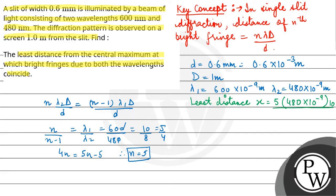Into D, which is 1 meter, upon d, which is 0.6 into 10 raised to the power minus 3. So x comes out to be 4 into 10 raised to the power minus 3 meter, or 4 millimeter.